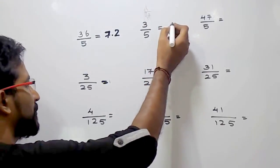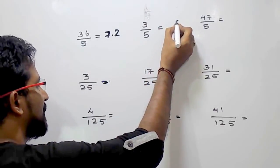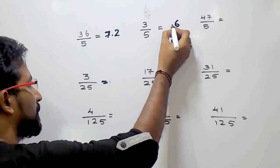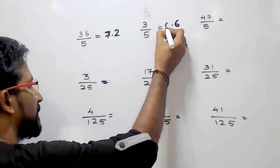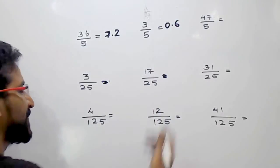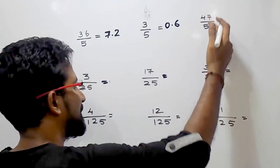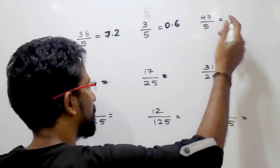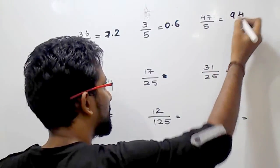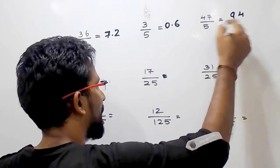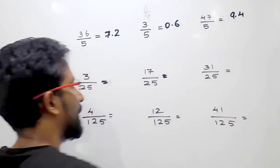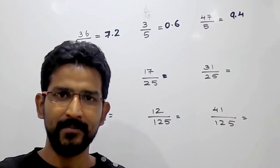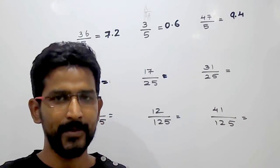Now for example, 3 divided by 5: 3 times 2 is 6. There is only one digit, so put the point here, making it 0.6. Now 47 divided by 5: multiply 47 by 2, that is 94. Put the decimal after one number from the right, so it will be 9.4. This is how we can divide any number by 5.